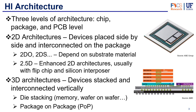So we wanted to mention a little bit about the architecture — how do these chips come together and how are they laid out? First of all, there are three main levels of architecture: chip level, package level, and PCB level. We have divided them into 2D architectures, which are devices placed side by side and interconnected on the package, with subdivisions — 2DO for organics or 2DS for silicon depending on the substrate material used.